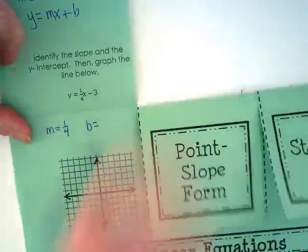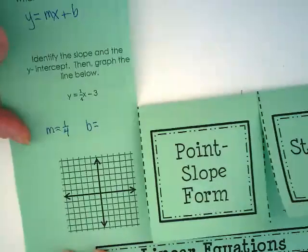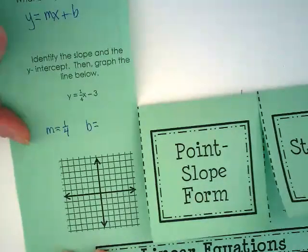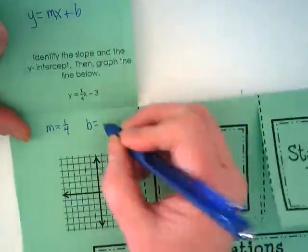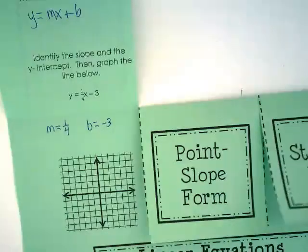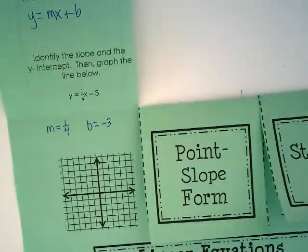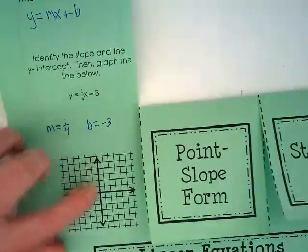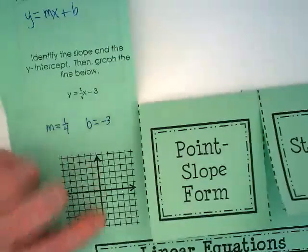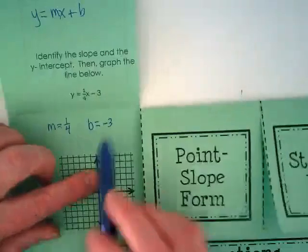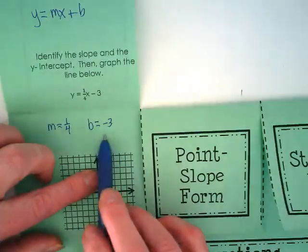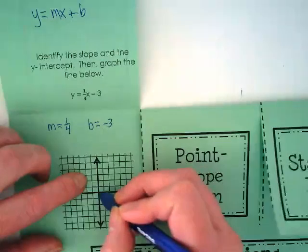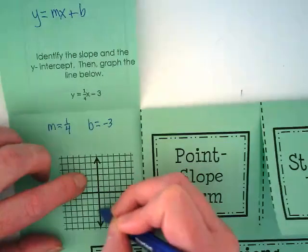What's my b? What's in the place of the b? Negative three. That's always where we start because that is a point on the graph. The b is the y-intercept, so it's where the line crosses the y-axis. This equation is telling us it crosses at negative three. We're going to go down and find negative three and put a point there.